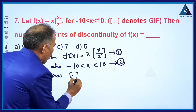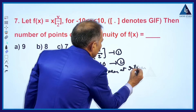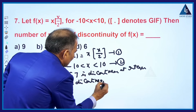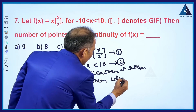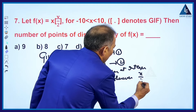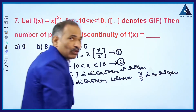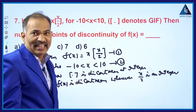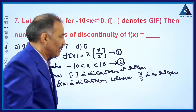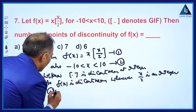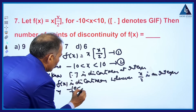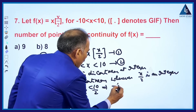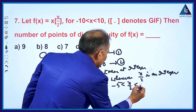We know [·] is discontinuous at integers. So f(x) is discontinuous wherever x/2 is an integer. The x limits are -10 to 10. To find the x/2 limits: dividing through by 2 gives -10/2 < x/2 < 10/2, which implies -5 < x/2 < 5.